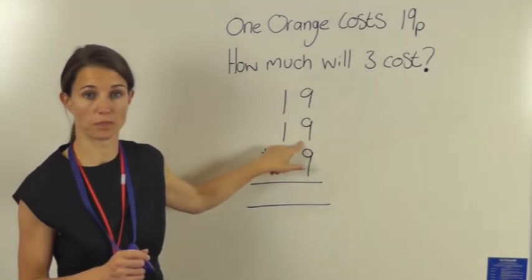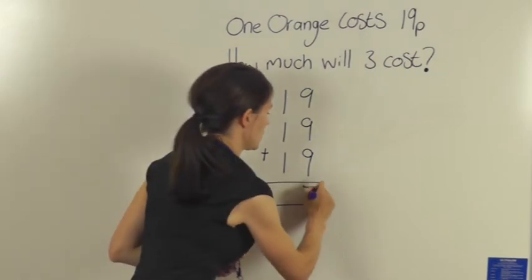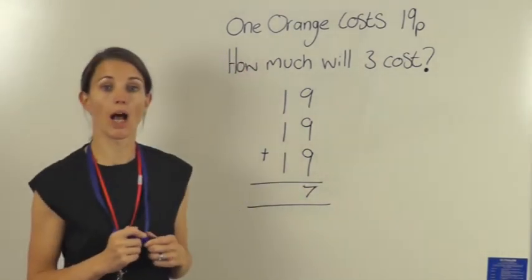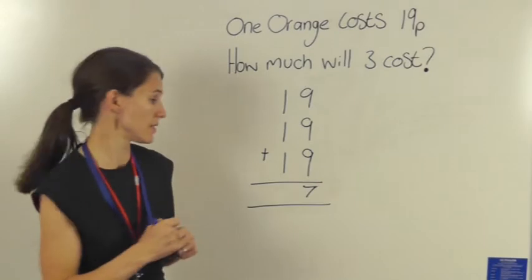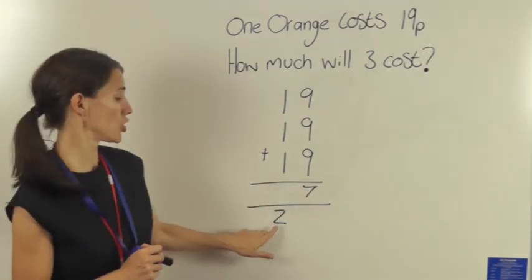I'm going to put the seven down in the units column and carry the two tens like so: 27.